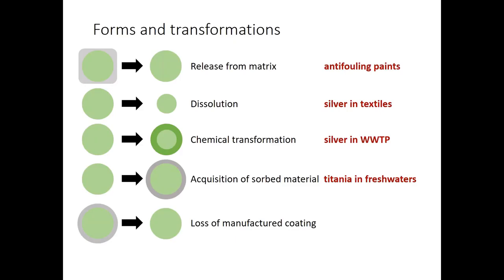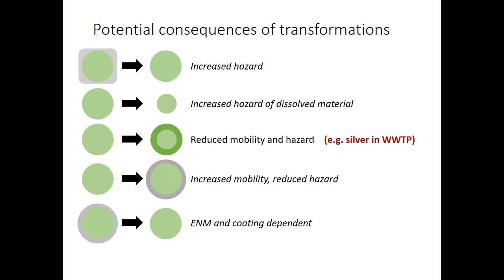Talking about nanomaterial form and transformations: because nanomaterials are defined by their physical properties, they can potentially have any chemical composition. Consideration of their behaviour, which could include modelling, needs to take this into account by providing for a range of potential transformations. Example transformations include: release of material from an enclosing matrix, such as particles from anti-fouling paints; dissolution of certain nanomaterials, such as silver in textiles; chemical transformation; acquisition of adsorbed material, which could happen in wastewater treatment or fresh waters; and loss of a manufactured coating.